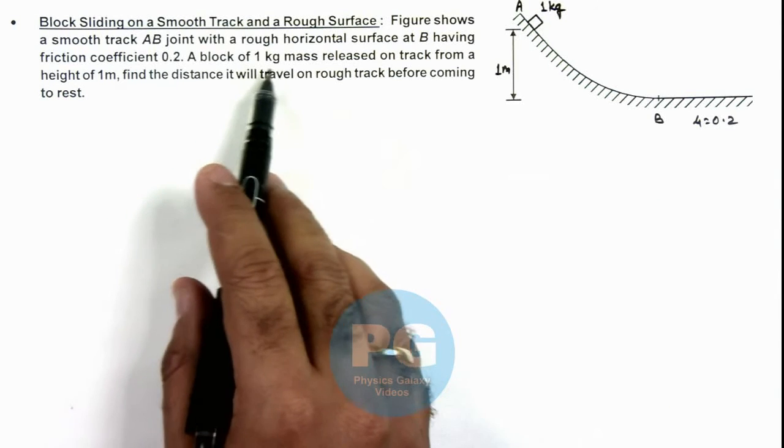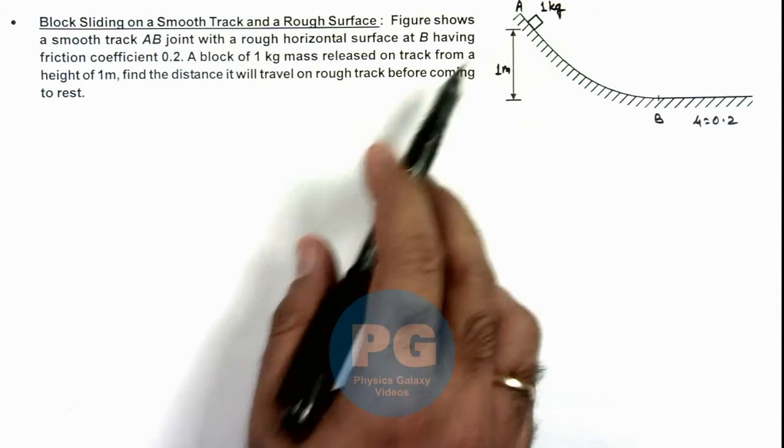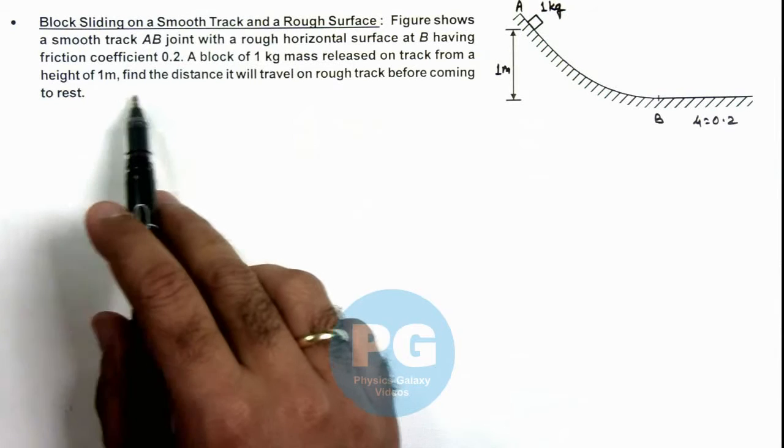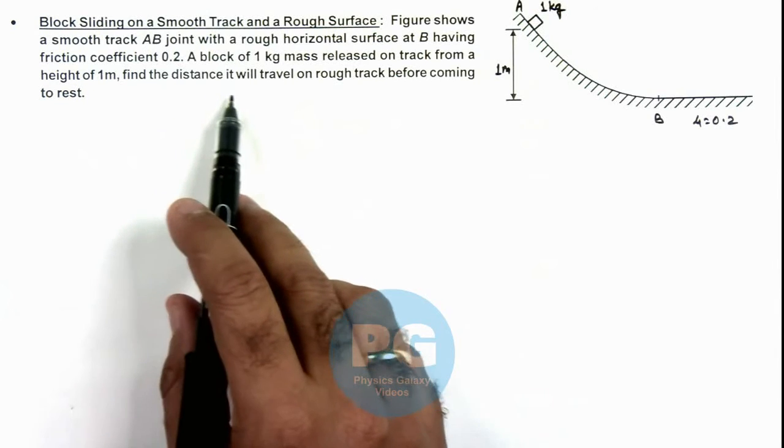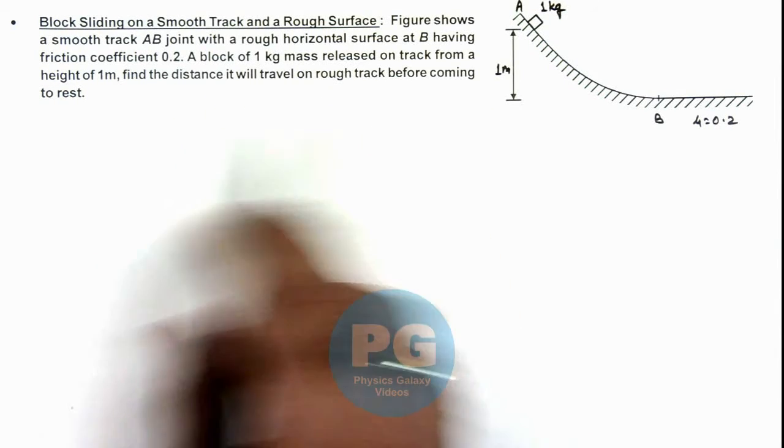A block of 1 kg mass is released on track from a height of 1 meter and we are required to find the distance it will travel on rough track before coming to rest.